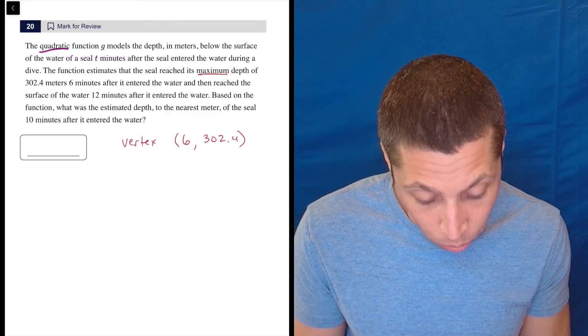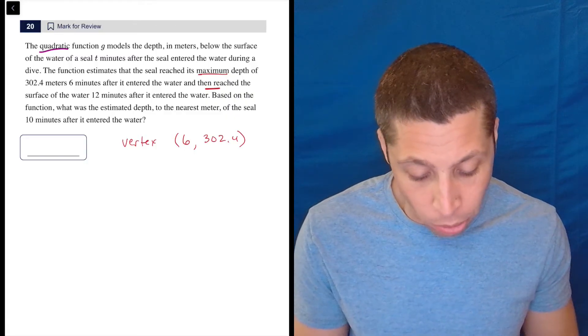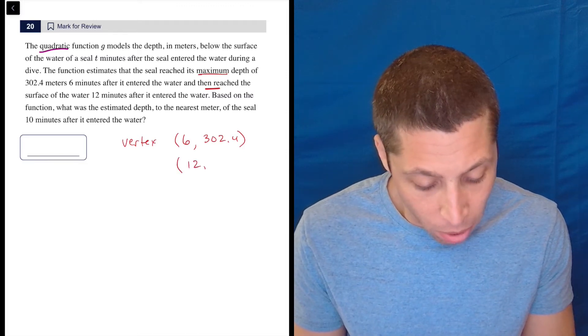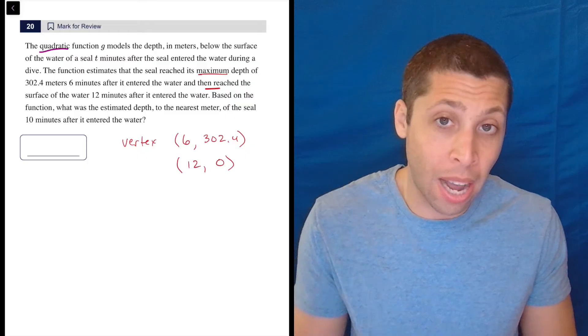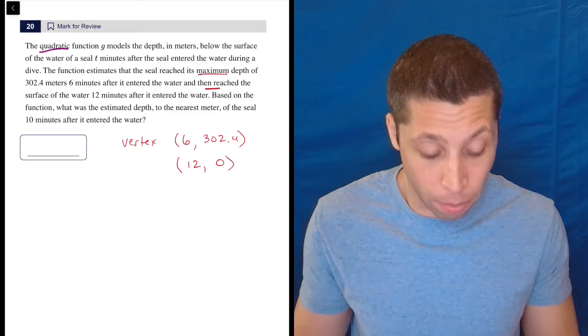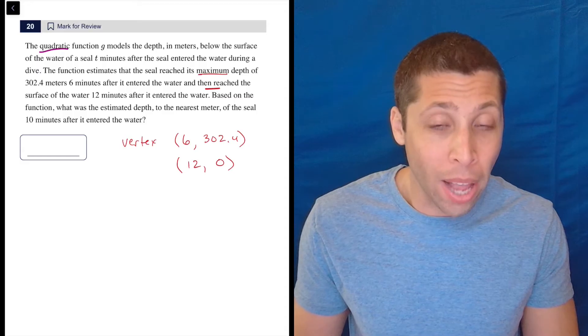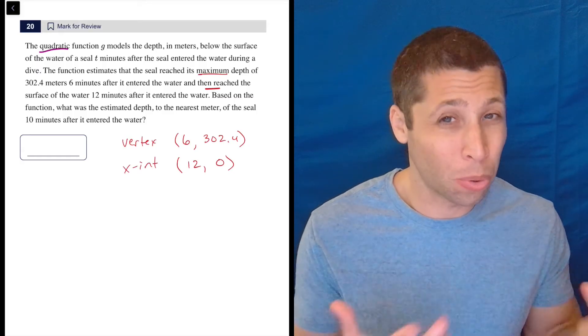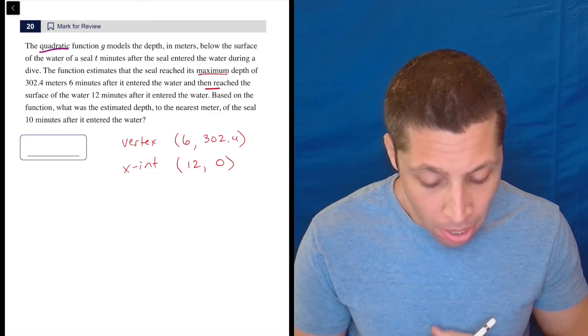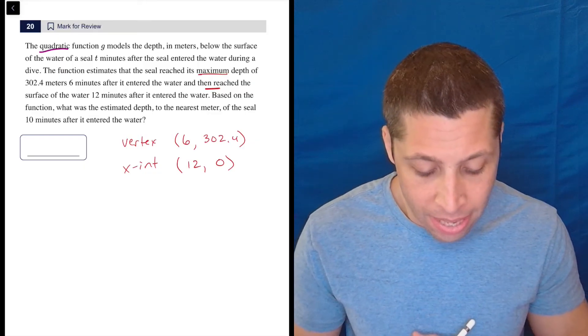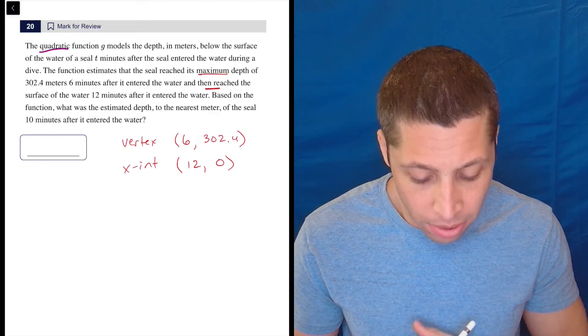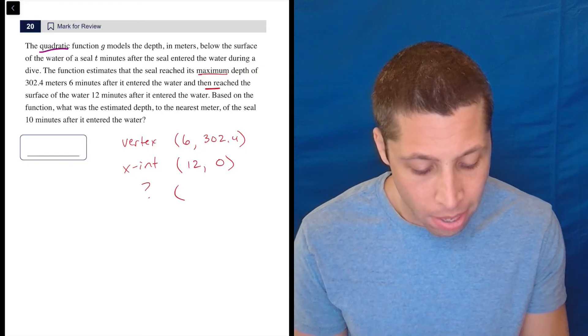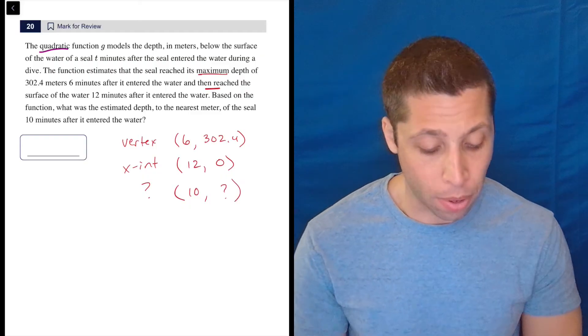After it entered the water and then reached the surface of the water 12 minutes after it entered the water. So the surface 12 minutes after. What is the depth of the surface? Zero. So this is a case where we have a Y coordinate of zero, an X intercept. We're getting some pretty special points here. Based on the function, what was the estimated depth to the nearest meter of the seal 10 minutes after it entered the water? So this is some random point, but we have a 10 and we're trying to find the Y that goes with it.